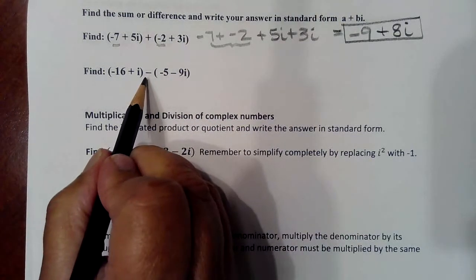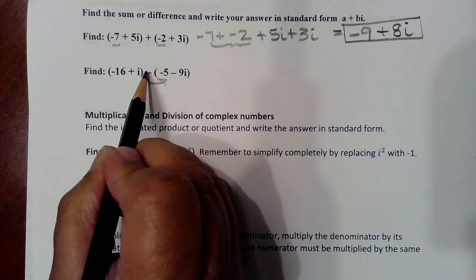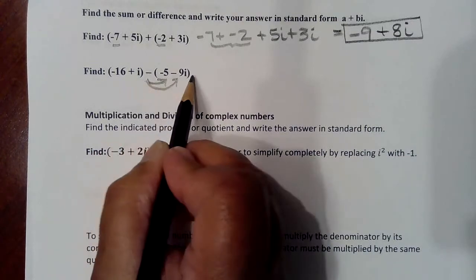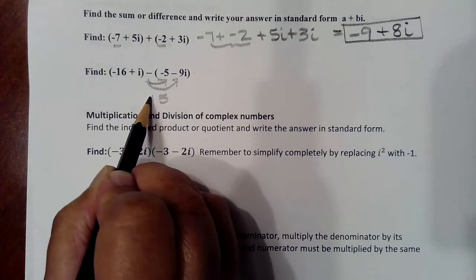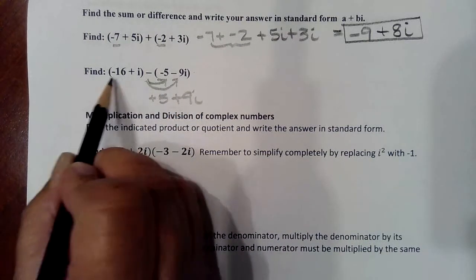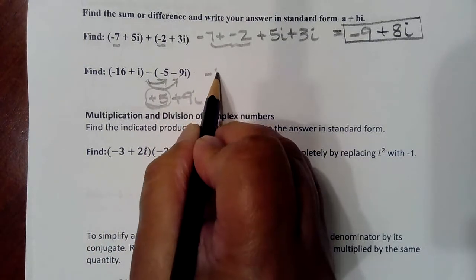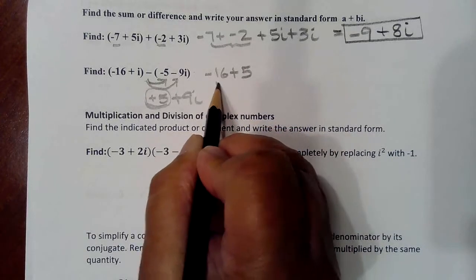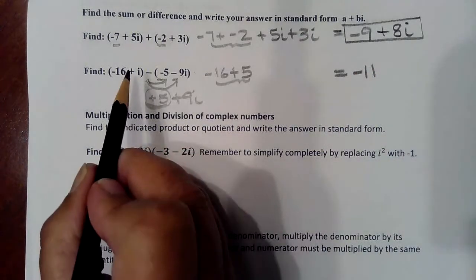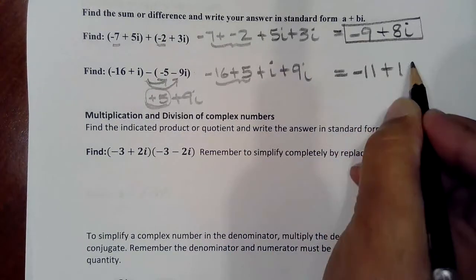In the subtraction problem, you have one extra step brought on by the subtraction sign, which means all of the second complex number times negative one — in other words, distribute the negative through the parentheses, switching both signs. So you're really looking at positive 5 and positive 9i. Combine the real numbers: negative 16 combined with positive 5 gives negative 11. The imaginary portion is positive i combined with 9i, giving a total of 10i.